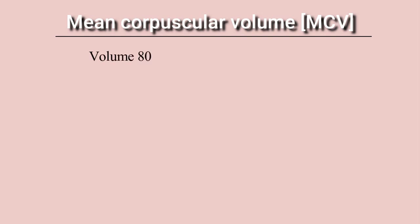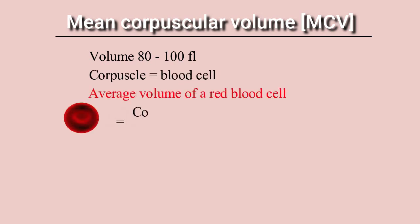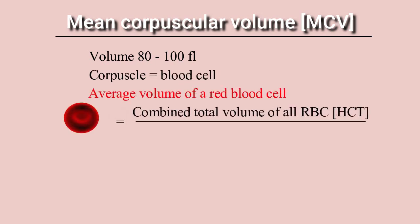The volume of an RBC is about 80 to 100 femtolitres. This is called the mean corpuscular volume, or MCV. Corpuscle is a Latin word meaning blood cell. MCV refers to the average volume of a red blood cell, and it is different from MCH and MCHC — it speaks about the total volume of an RBC rather than only the hemoglobin. MCV is an important indicator of the presence of various types of hematological disease conditions.